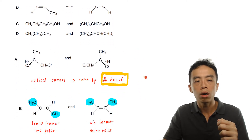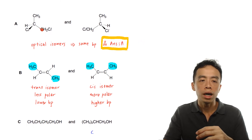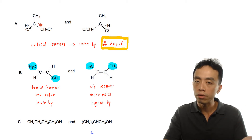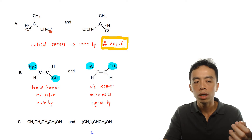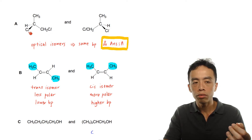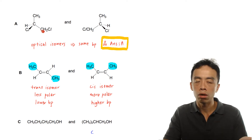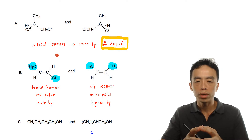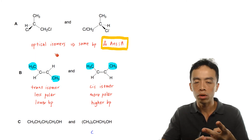For option A, this is pretty straightforward. These two molecules are mirror images of each other, and the central carbon is chiral — bonded to four different groups: a methyl group, CH₂Cl, a chlorine, and a hydrogen. So this carbon is chiral, making these two molecules optical isomers.